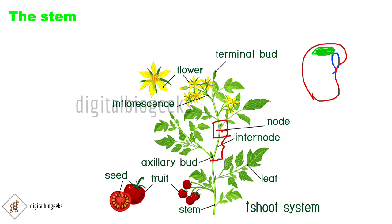Buds are also present on the stem. A terminal bud is present at the top of the stem. Axillary buds are produced at the nodes where the leaves grow from. When young, the stem is green; then it becomes woody and dark brown.